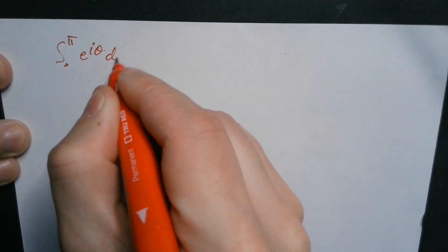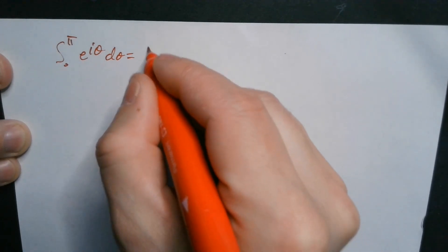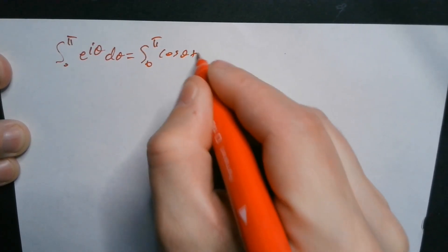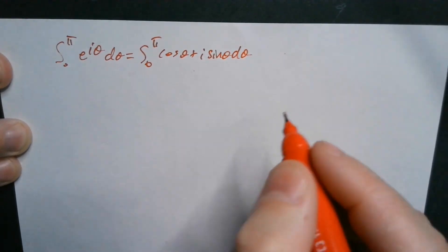So let's do the integral from 0 to pi of e to the i theta d theta. So first, you can break this up to the integral from 0 to pi and just write this as cosine theta plus i sine theta and then d theta this way.